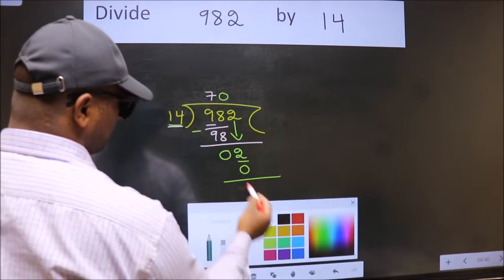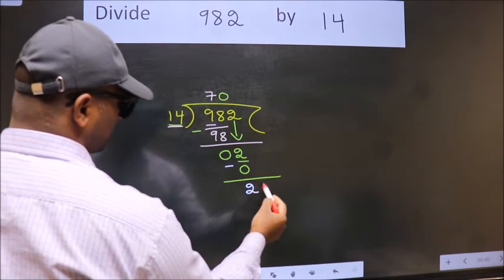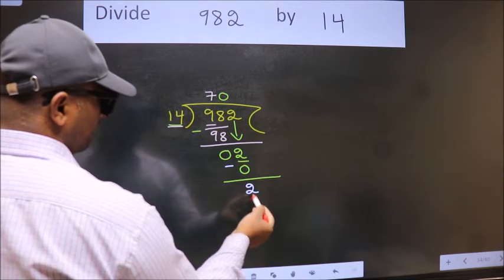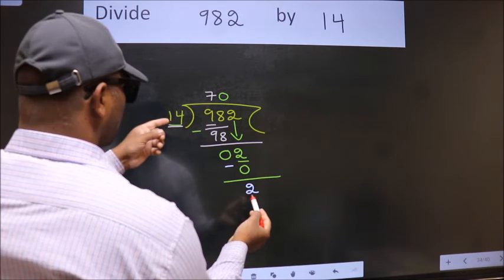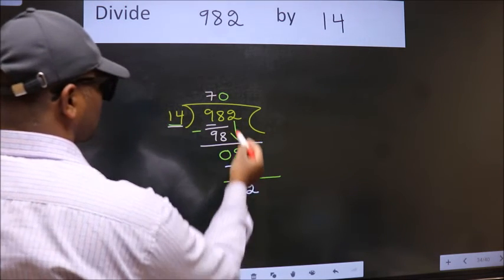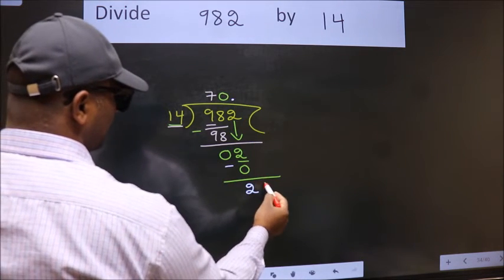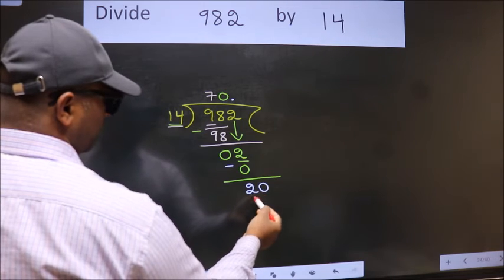Now we subtract. We get 2. Over here, we did not bring any number down, and 2 is smaller than 14. So now we can put dot and take 0. So 20.